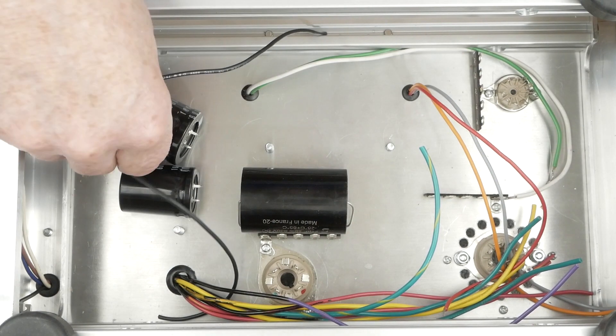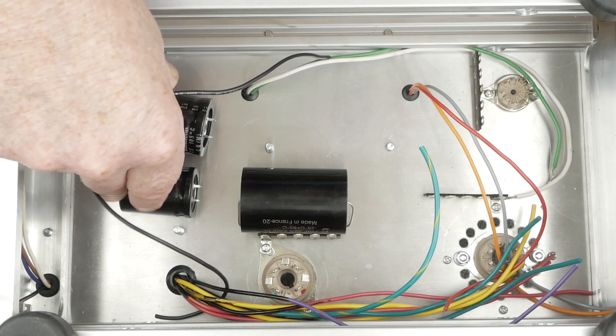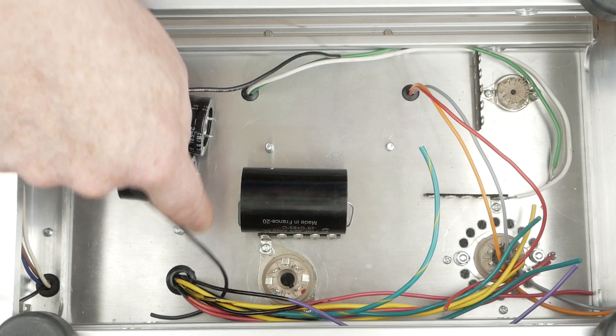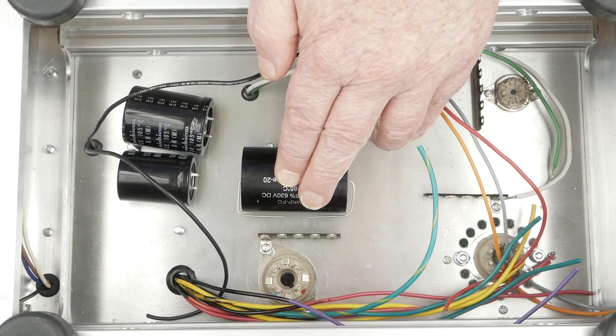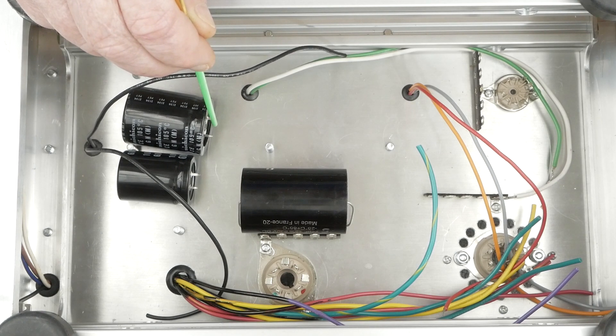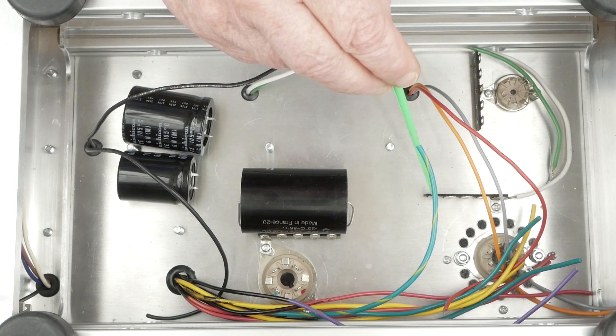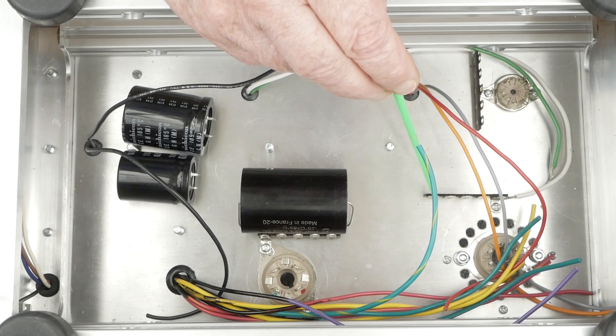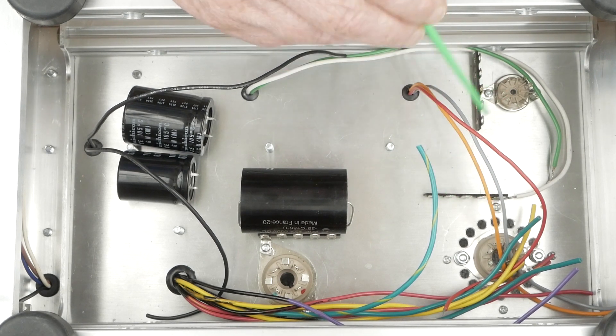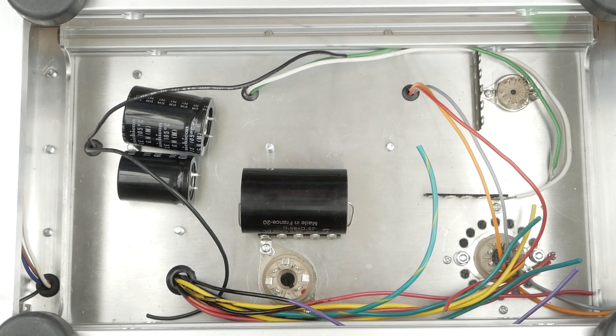And then probably going to put the two negatives facing each other like this and then tie them together and then bring them up here to the same star ground point. And then the filtered high voltage DC will be on this pin of this cap. We can run a wire up here to this tag strip to then do the dropping resistor and filtering cap and stuff that's going to be over here. May actually run it straight over here to this tag strip.